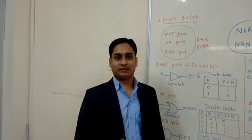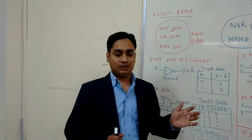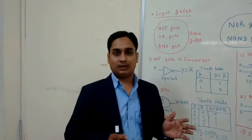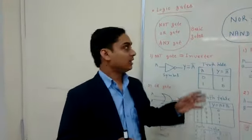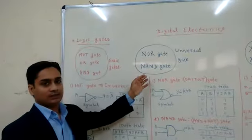We will discuss digital electronics. In digital electronics, logic gates are the main topic. Logic gates are used for arithmetic and logical operations. There are two types of logic gates. First logic gate is basic gates, and second logic gate is universal gates.